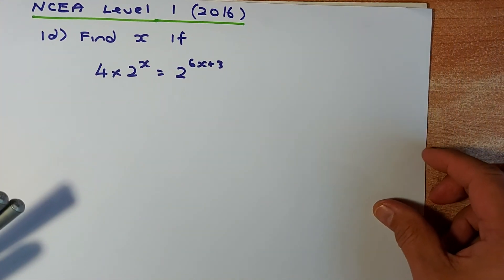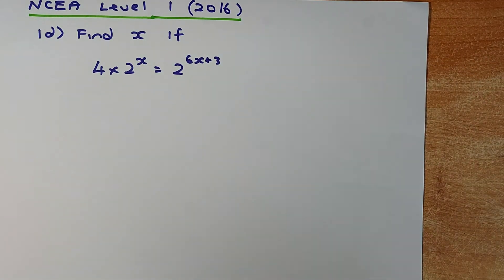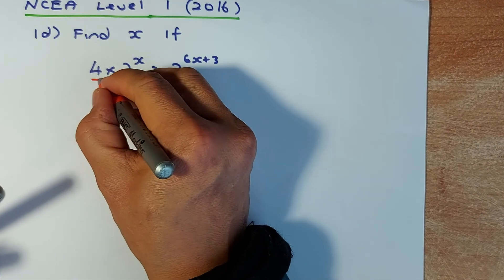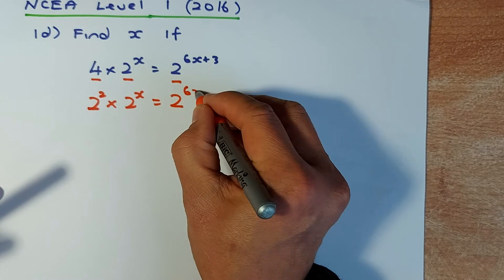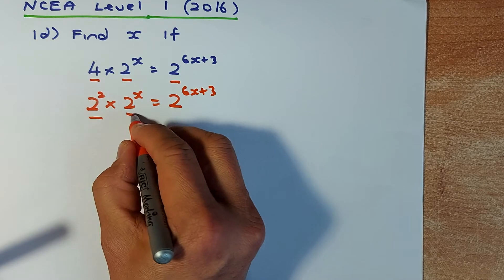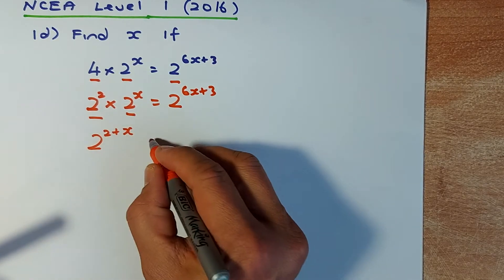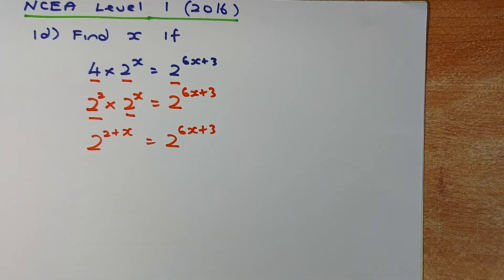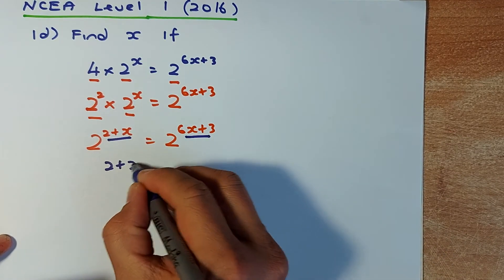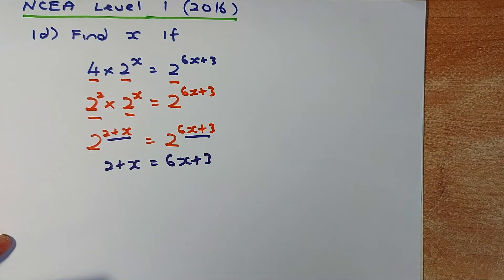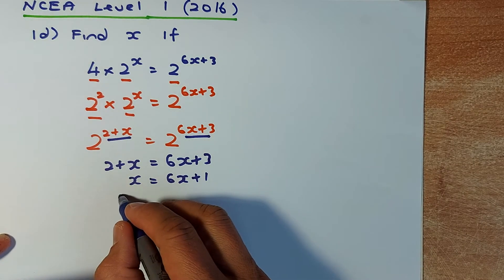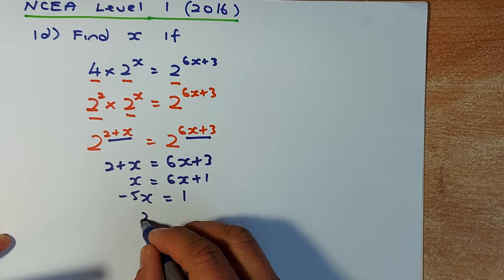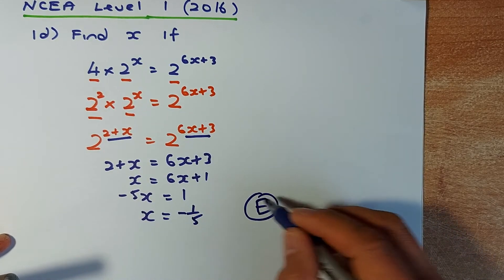Now the excellence question from NCEA Level 1, 2016. Make the same base: 2 to the power of 4 times 2 to the power of (2X) equals 2 to the power of (6X plus 3). Adding powers on the left: 2 to the power of (2 plus 2X) equals 2 to the power of (6X plus 3). Since the bases are equal, 2 plus 2X equals 6X plus 3. Subtract 2 from both sides: 2X equals 6X plus 1. Subtract 6X: minus 5X equals 1. Divide by minus 5: X equals minus one fifth. That is an excellence answer for 2016.